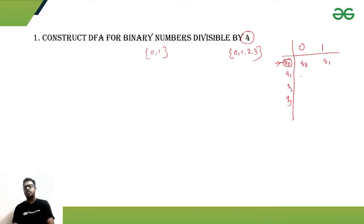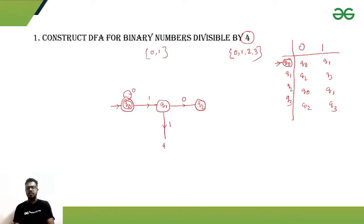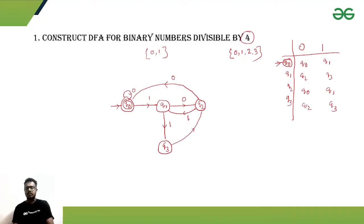The state table lists q0, q1, q2, q3 for each input column. For the state diagram: from q0, getting zero stays in q0; getting one goes to q1. From q1, getting zero goes to q2; getting one goes to q3. From q2, getting zero comes back to q0; getting one comes back to q1.